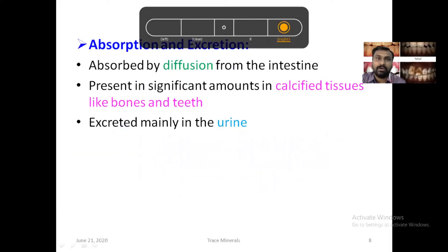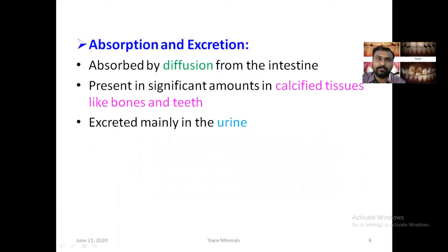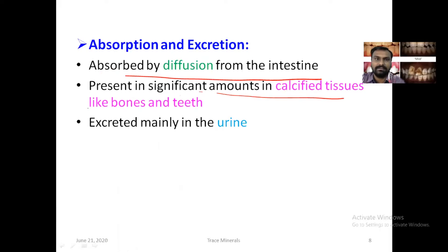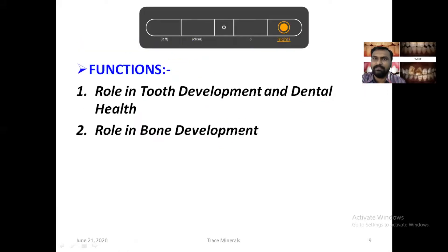Fluoride is absorbed by diffusion from the intestine. It is present in significant amounts in calcified tissues like bone and teeth, and it is excreted mainly via the urine.